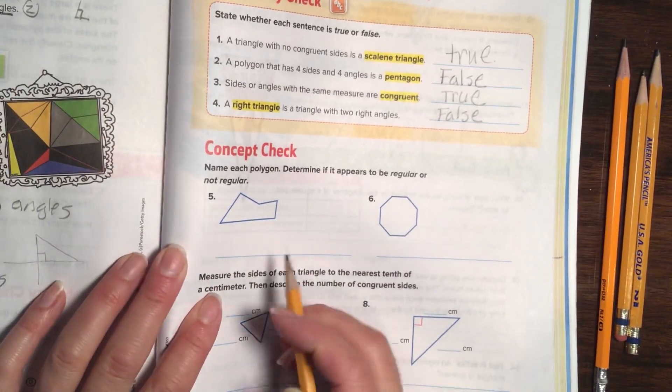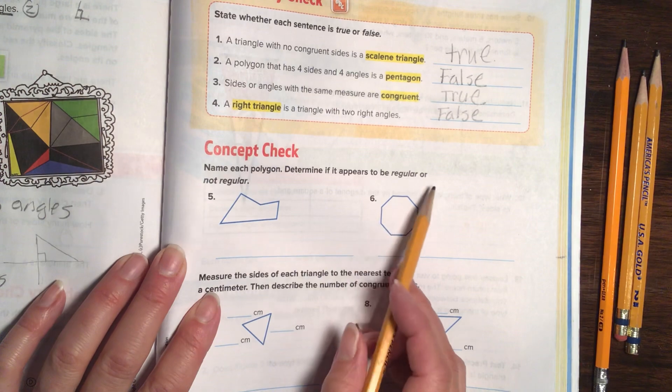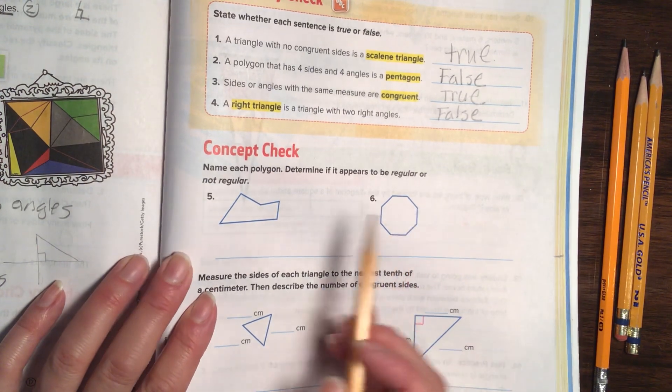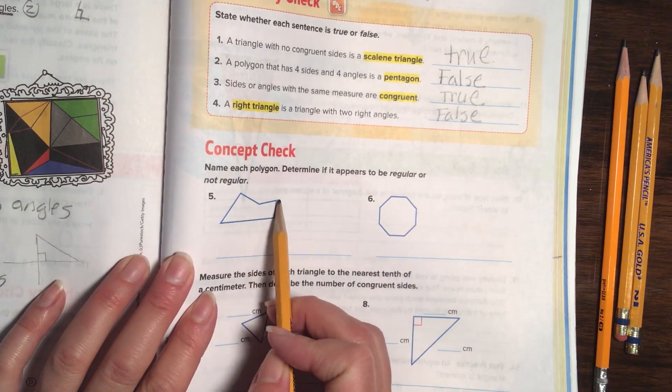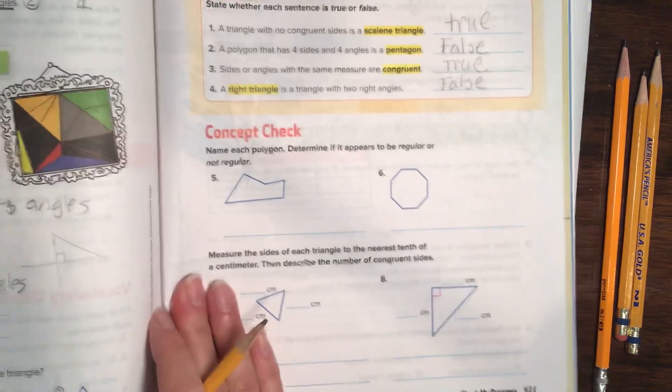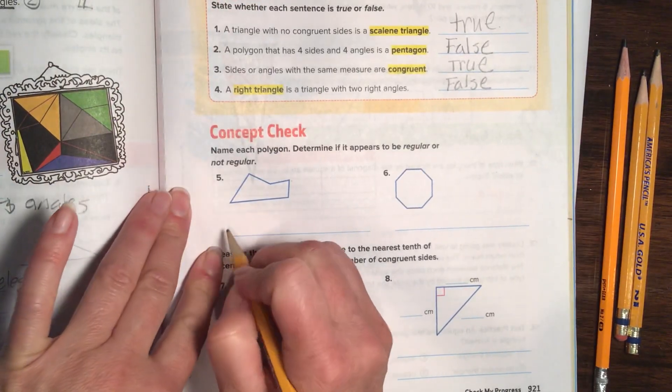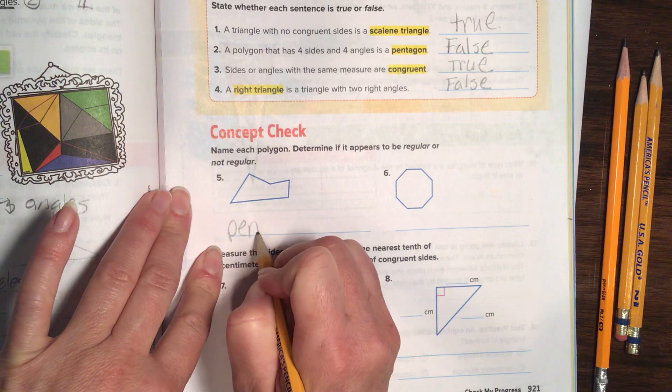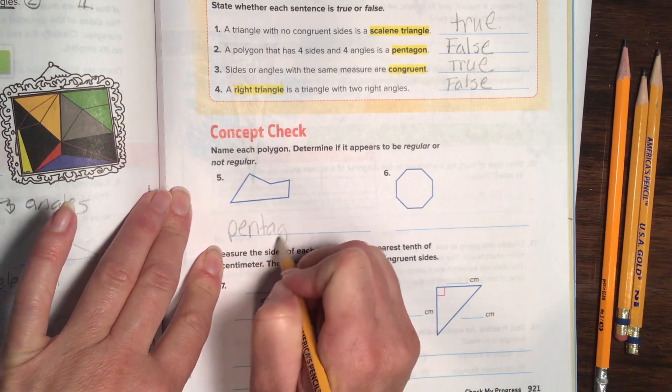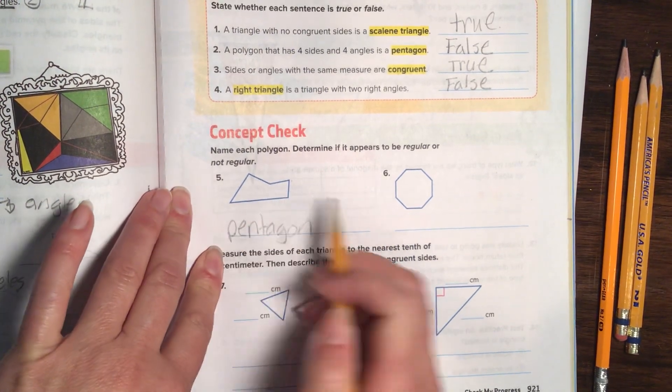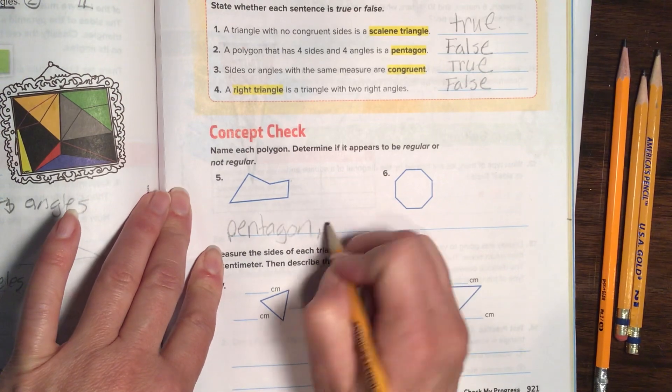Alright, let's bounce back over here. Okay, name each polygon. Determine if it appears to be regular or not regular. So we're going to count the sides. One, two, three, four, five. And that is going to be a pentagon with five sides. We're going to write pentagon. And the sides are not the same. So then we're going to say not regular.